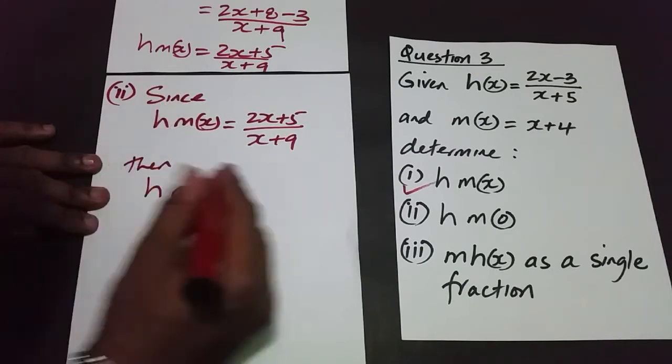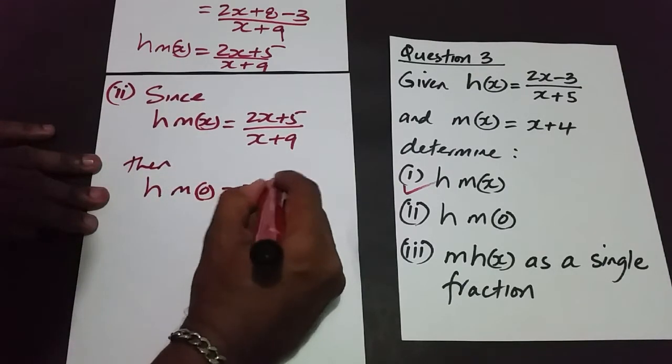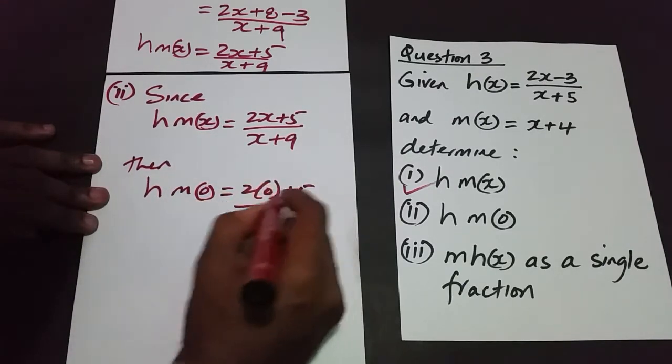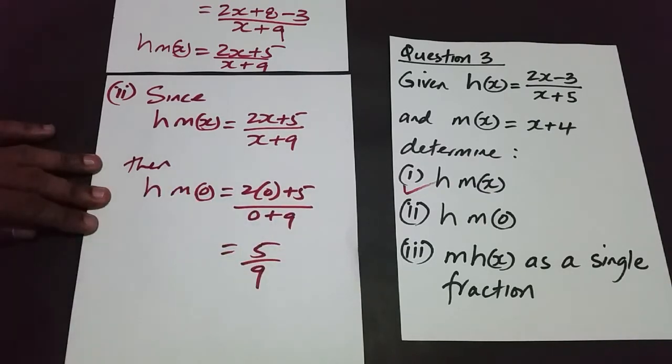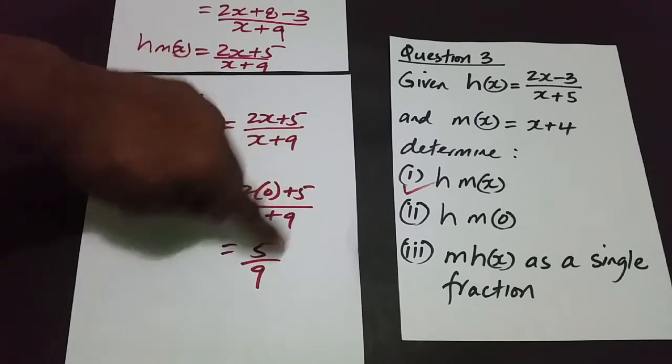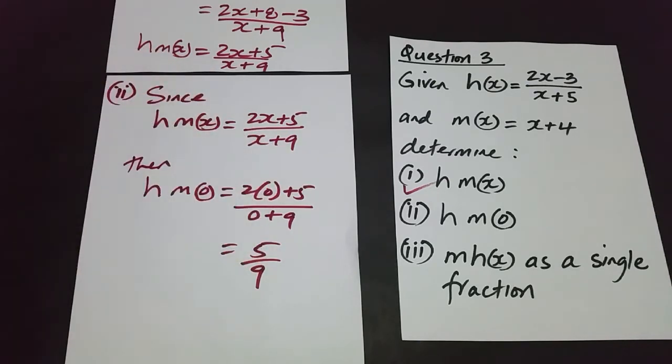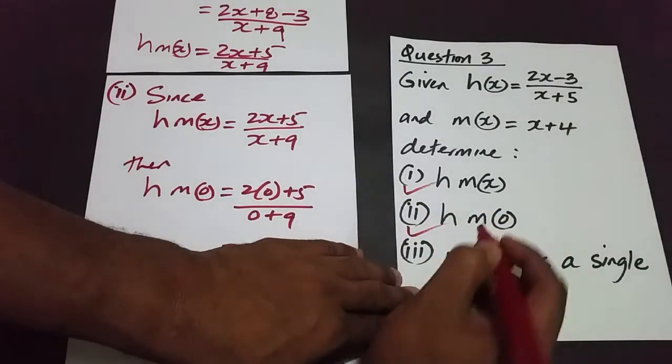Simply means we're replacing x with 0. So this is going to be 2 times 0 plus 5 over 0 plus 9, and that clearly is going to be 5 over 9. 2 times 0 gives us nothing and the 5 comes back as a numerator and the denominator clearly is 9. So that will take care of part two of the question.